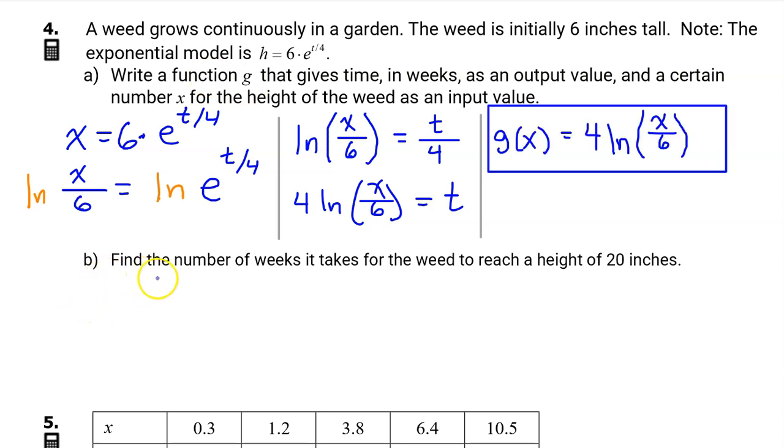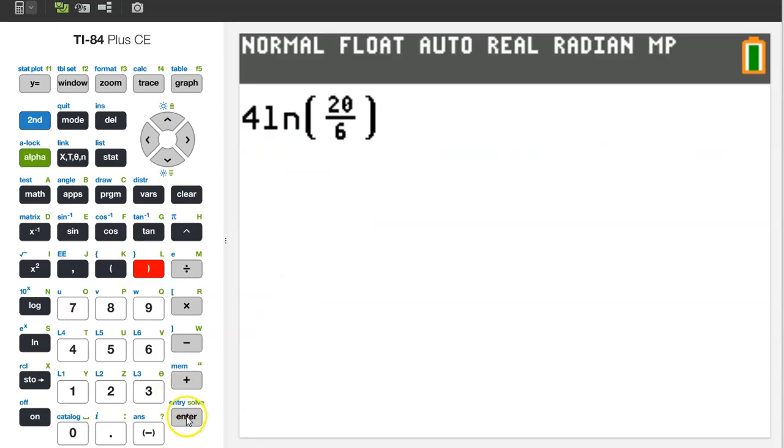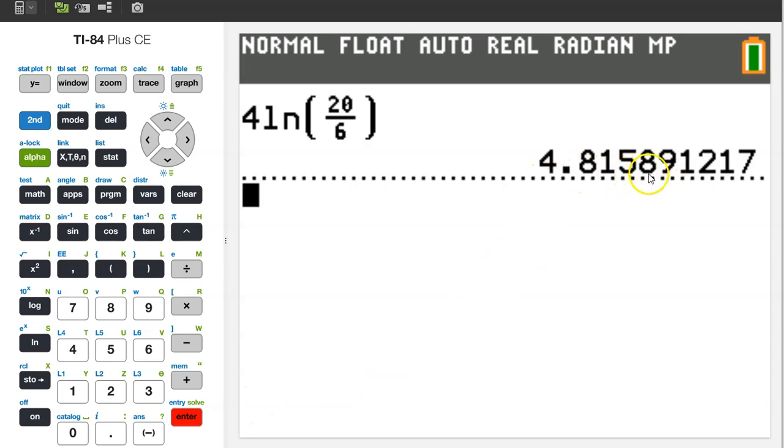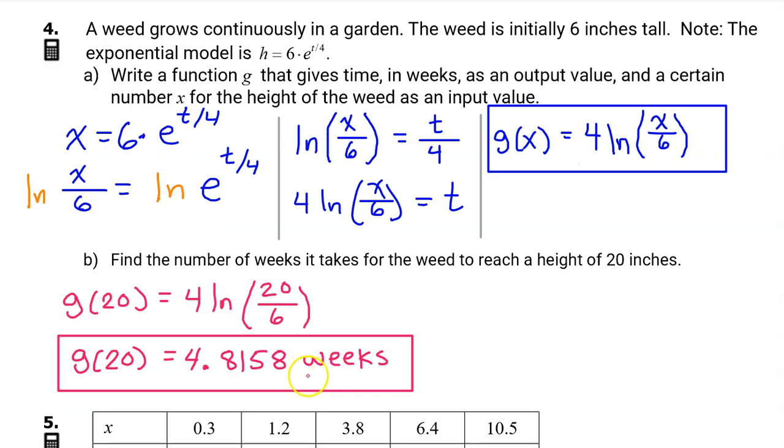Part b: Find the number of weeks it takes for the weed to reach a height of 20 inches. Well, the function g that we found in part a gives the time in weeks that it takes for the weed to reach height x. So we just need to evaluate g at 20. Now we can put this expression in the calculator for the final answer. 4.8158. Again, don't try to round, just use 4 decimal places. Don't forget to include the units, which are weeks.